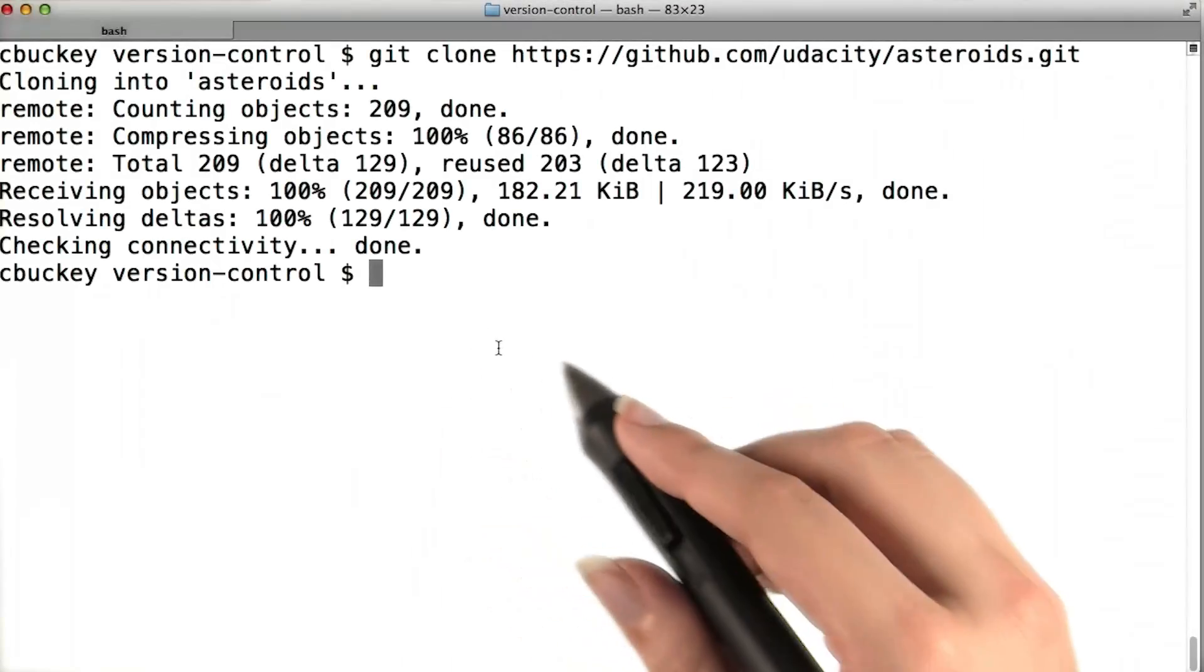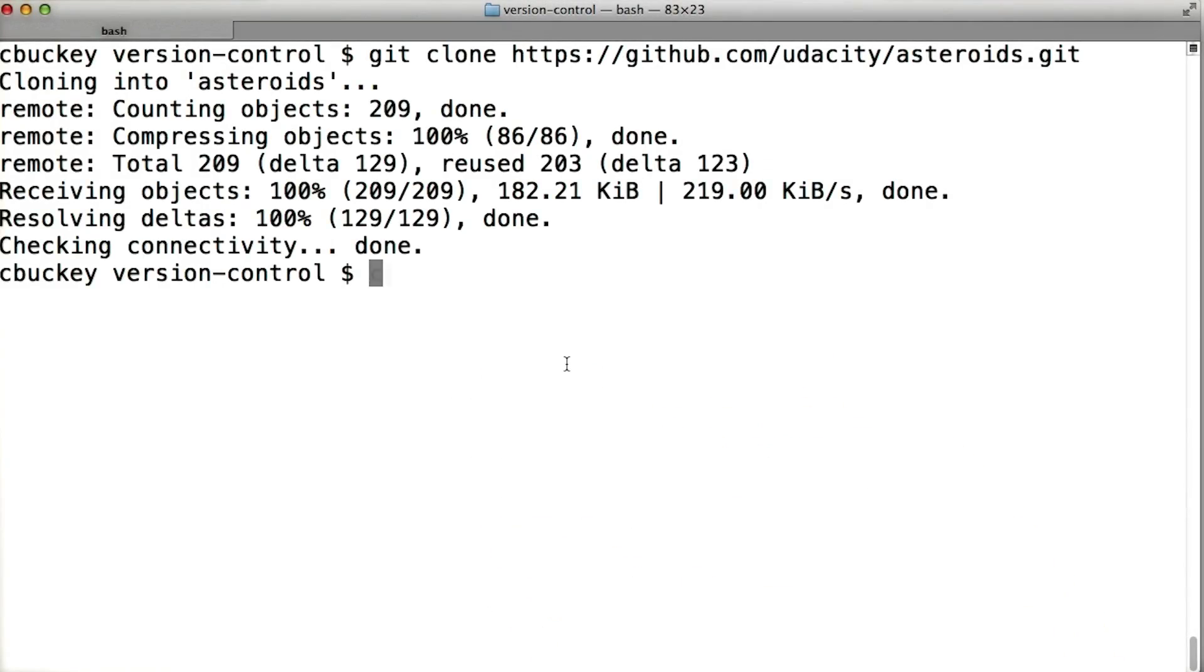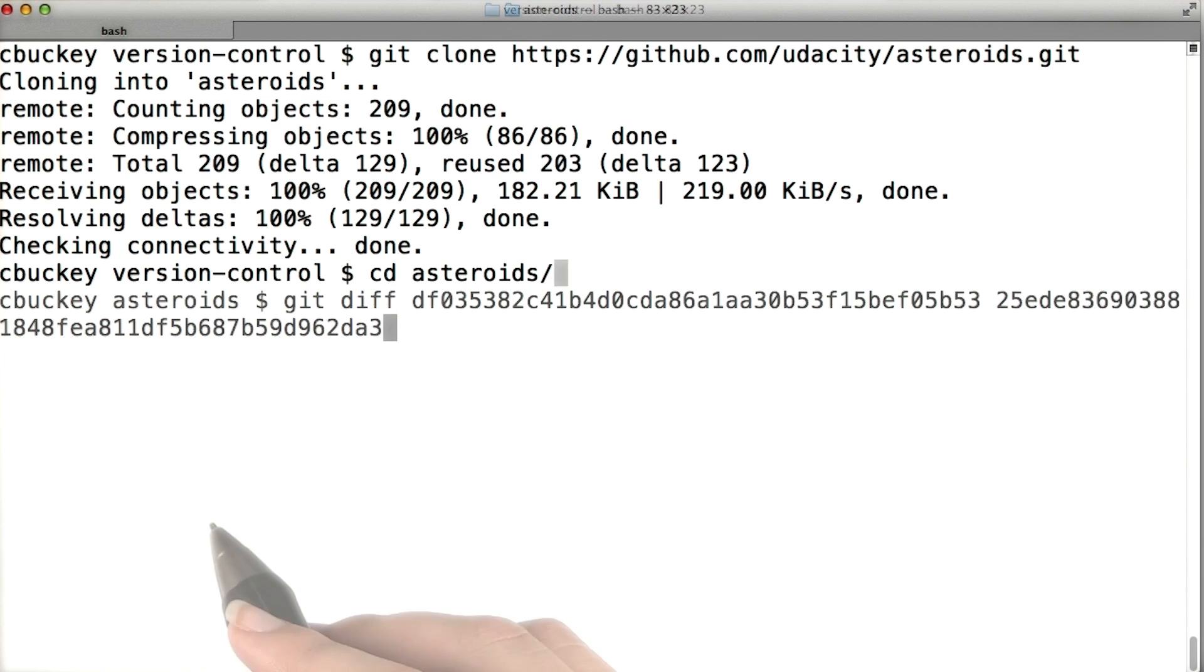Now I won't need internet access anymore for the rest of the lesson, so I'm going to head back to the forest. Once the repository has finished cloning, go ahead and cd into it. Now you should be able to use git log and git diff just like I did earlier. Go ahead and give it a try.